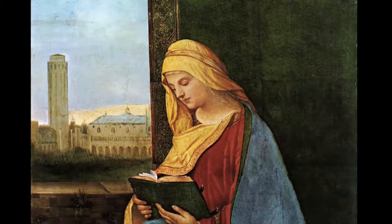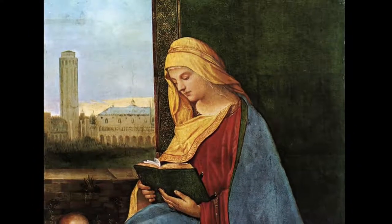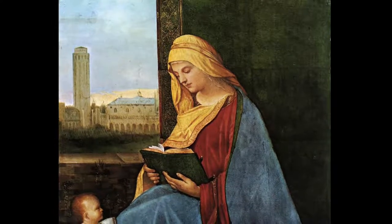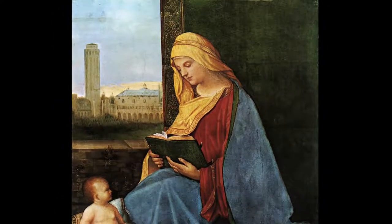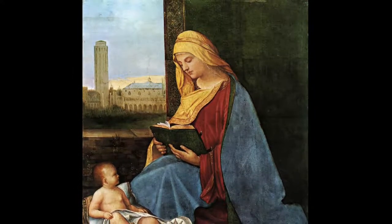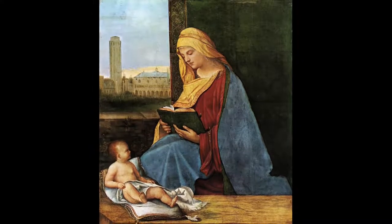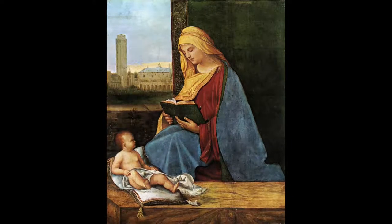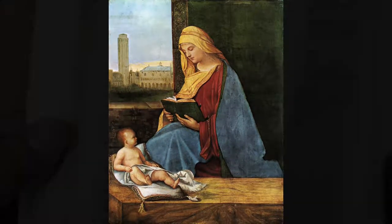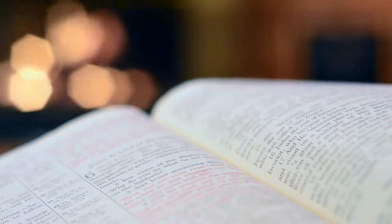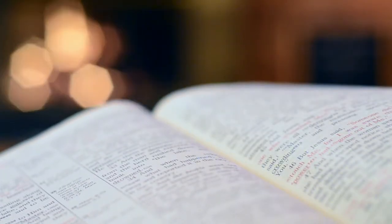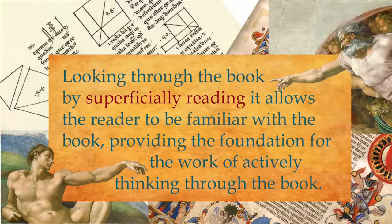Likewise with reading — the discipline of systematic skimming and superficial reading gets us through that awkward period of becoming familiar with the content, giving it a quick once-over, reading through the book without stopping as quickly as we can, not worrying about understanding. That way, when we go through the book again, we're free to enjoy it, actively engage with it, and put more of ourselves into the task. Like systematic skimming, the goal here is not to understand the text but to become more familiar with the content. Looking through the book by superficially reading it provides the foundation for actively thinking through the book.